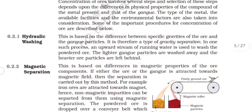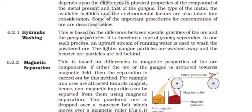Hydraulic washing. This is based on the difference in specific gravities of the ore and the gangue particles. It is therefore a type of gravity separation, in which such process, the upward stream of running water is used to wash the powdered ore. The lighter gangue particles are washed away, and heavier ore particles are left behind.